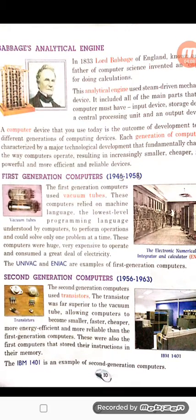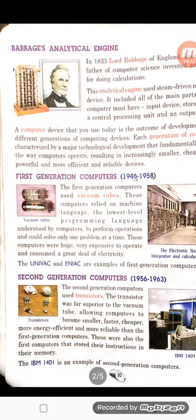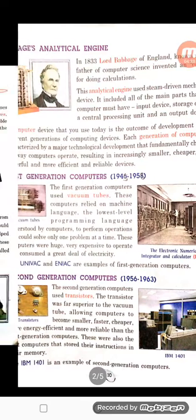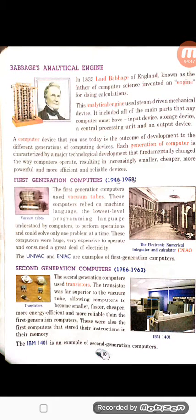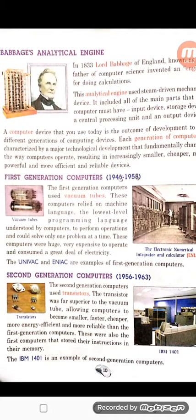From this point, our first generation started. In the first generation, from 1945 to 1956, vacuum tubes were used in computers and low-level programming language, also called machine language, was used. The size of these computers was so large that they occupied the space of a big room. They were so huge and expensive — at least 17,000 to 18,000 vacuum tubes were used. Examples are UNIVAC and ENIAC.